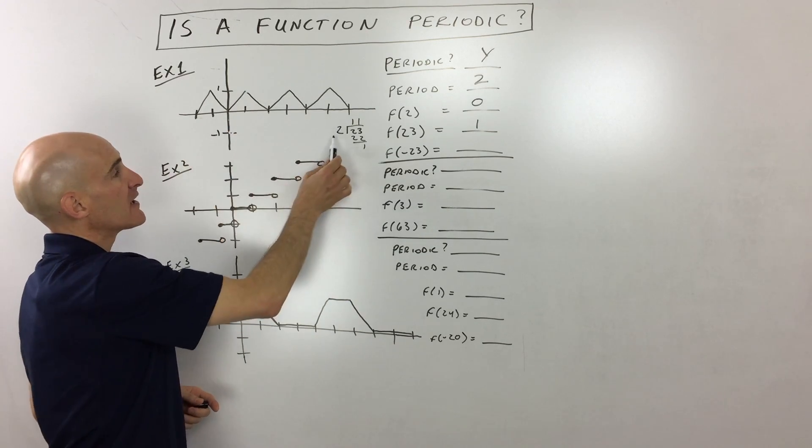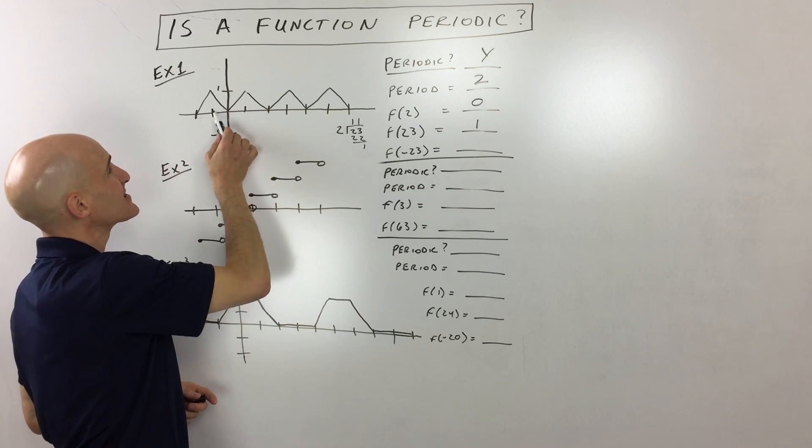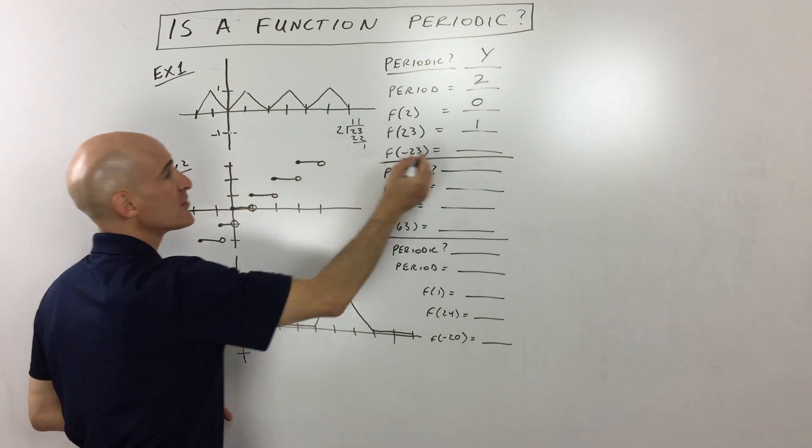repeating every two, right? Again, two goes into 23 11 times. So on that 23rd step to the left, the graph is going to be going up here, and the y value is going to be one.